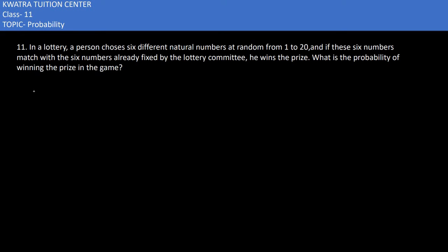In the eleventh part, it says: in a lottery, a person chooses six different natural numbers at random from 1 to 20. If these six numbers match with the six numbers already fixed by the lottery committee, he wins the prize. What is the probability of winning the prize in the game?